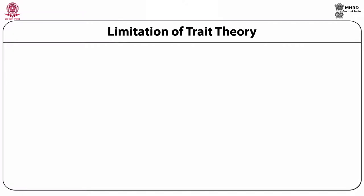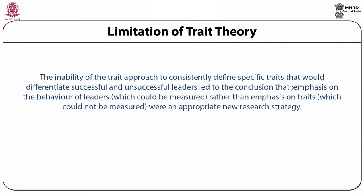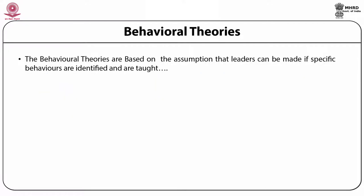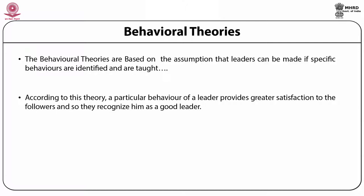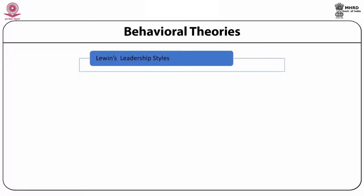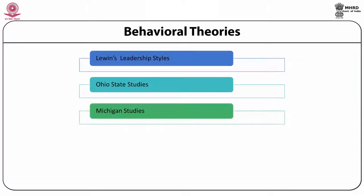The limitation of the trait theory is that it could not consistently define specific traits that differentiate successful and unsuccessful leaders. This led to the conclusion that emphasis on the behavior of leaders — which could be measured — was a more appropriate research strategy. The behavioral theories are based on the assumption that leaders can be made if specific behaviors are identified and taught. Moreover, trait theories did not address how leaders behaved. The behavioral theories are discussed under Lewin's leadership styles, Ohio State studies, Michigan studies, and the leadership grid.